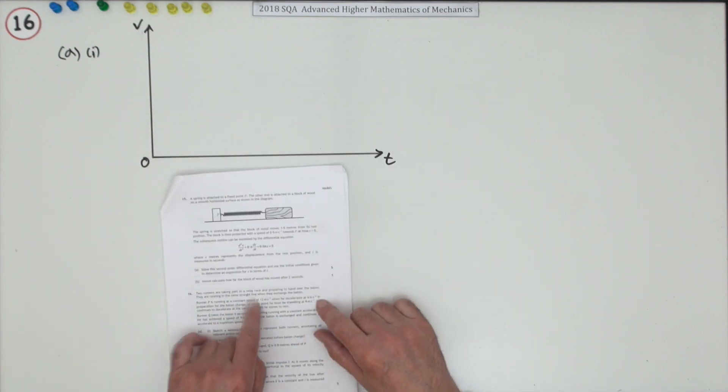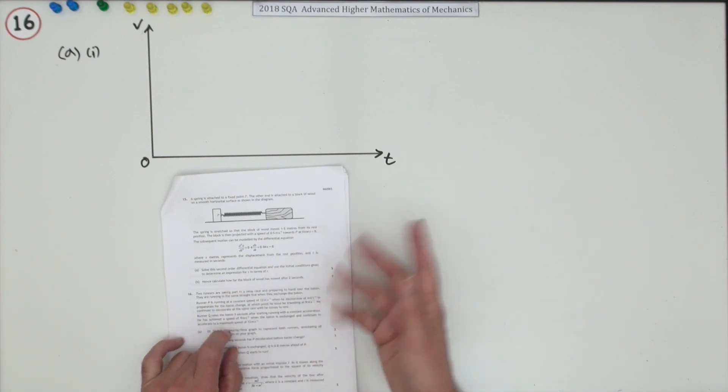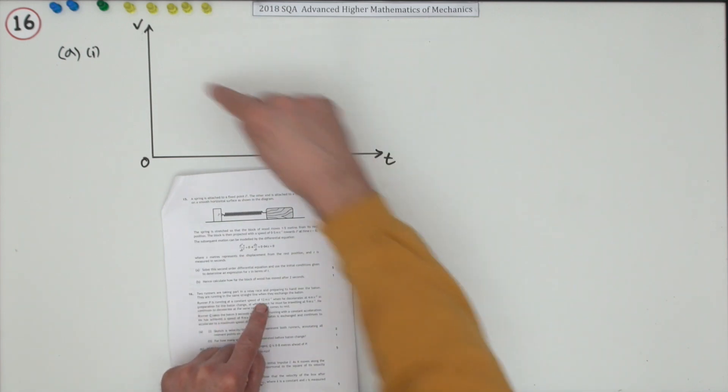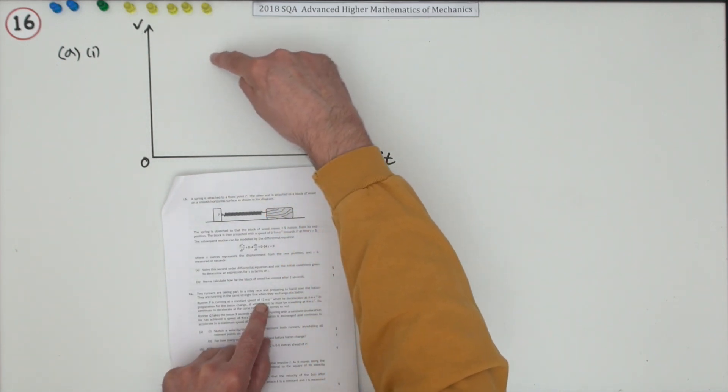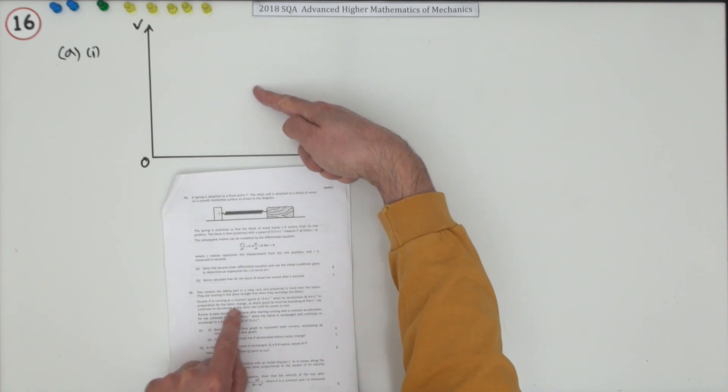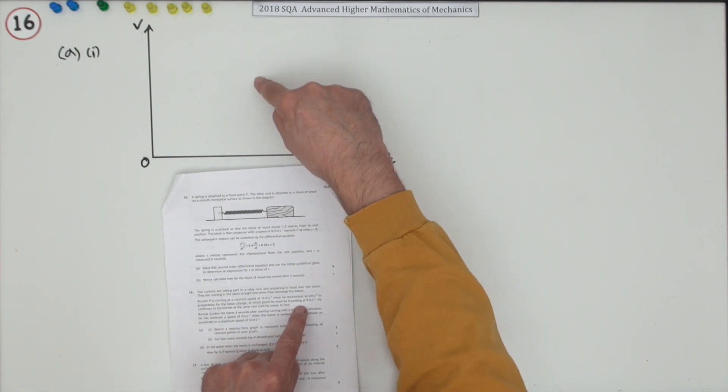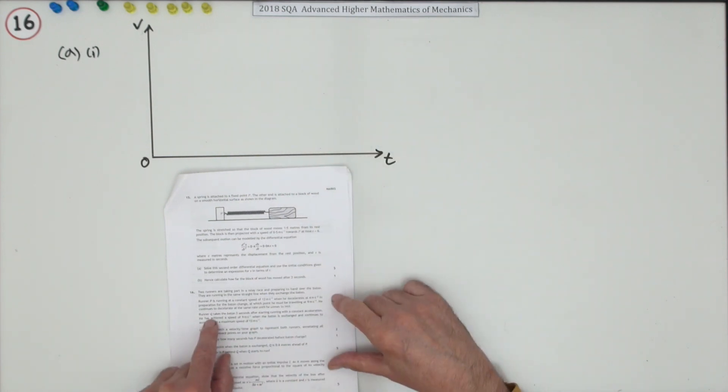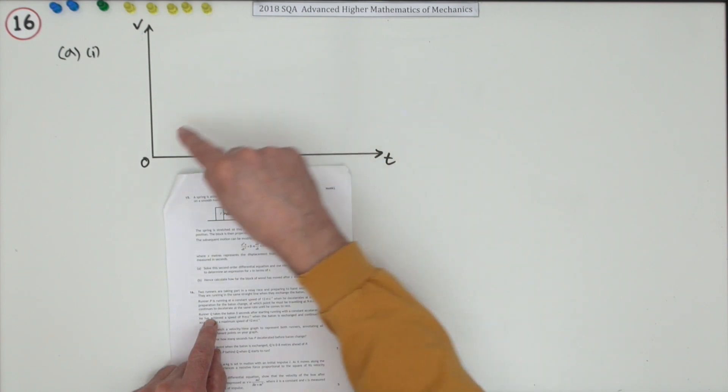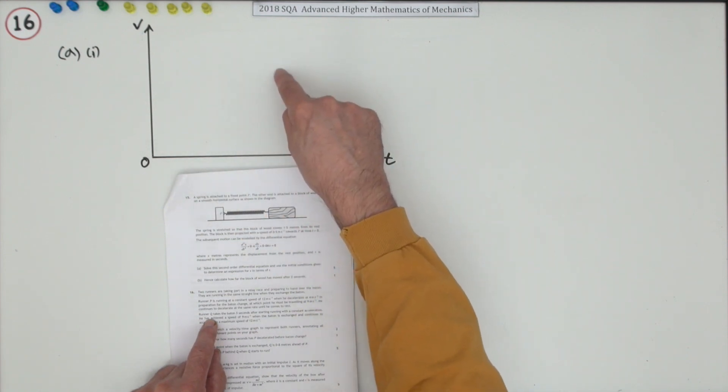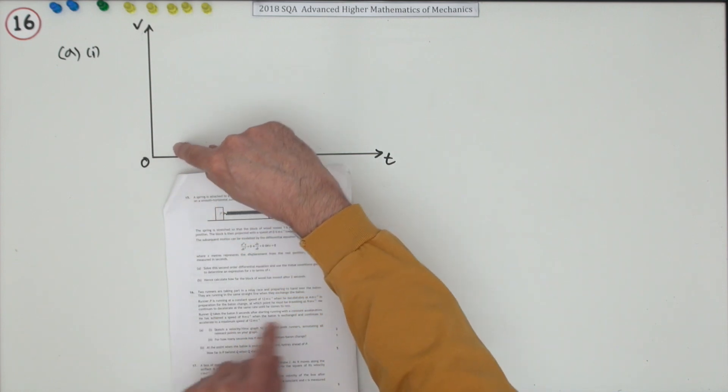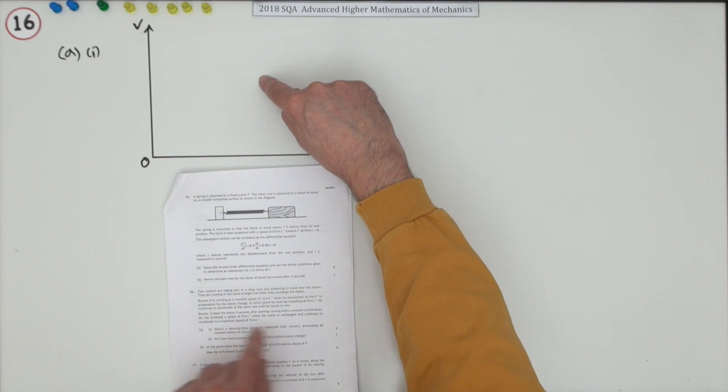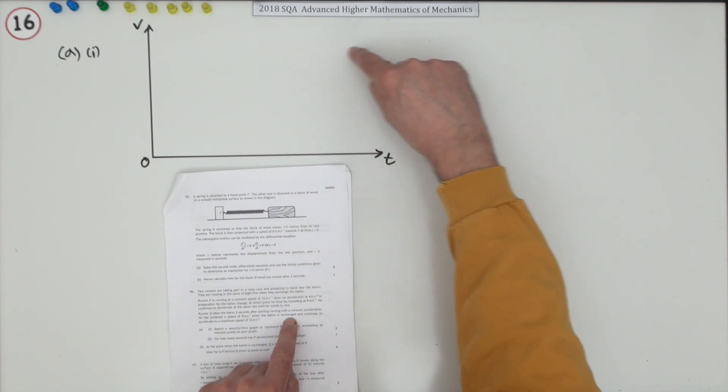Two runners are taking part in a relay race, hand over the baton, running in the same straight line. Runner P is running at a constant speed of 12 when he decelerates at 4 in preparation, at which point he must be travelling at 9. Q takes the baton three seconds after starting running. With constant acceleration until you get to 9 and then at that point continues accelerating up to 12.